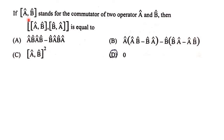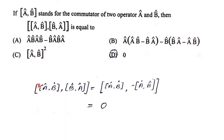Our next question is: if [A,B] stands for the commutator of two operators A and B, then [AB, BA] is equal to? Consider [AB, BA]. We know that [B,A] can be written as −[A,B]. Since the commutator of any quantity with itself is 0, we can write it as 0. Therefore, the answer is 0.